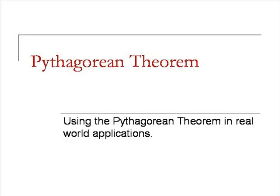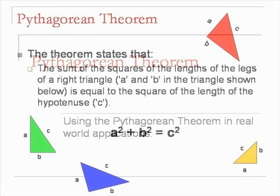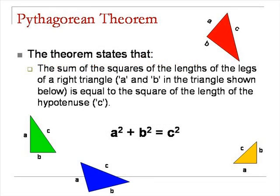The Pythagorean Theorem states that the sum of the squares of the lengths of the legs of a right triangle, which are A and B in the triangles shown, is equal to the square of the length of the hypotenuse, which is C.